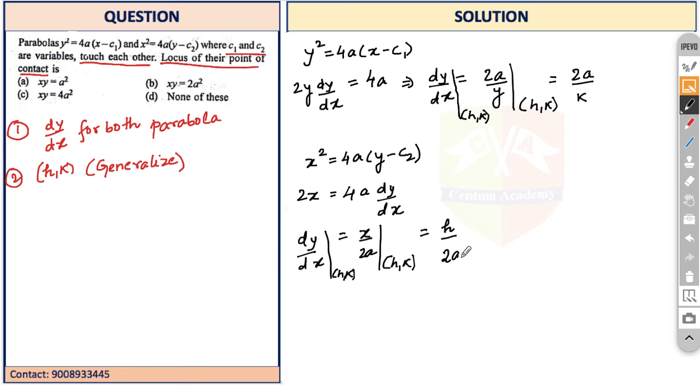As discussed in the roadmap, dy/dx for both parabolas should be the same. Let me call this equation (1) and this equation (2). Equating (1) and (2), we obtain h/2a = 2a/k, which implies hk = 4a².